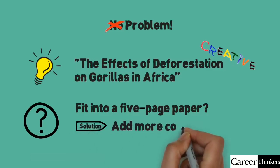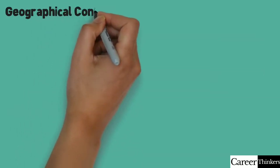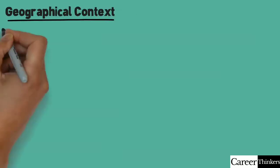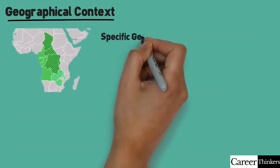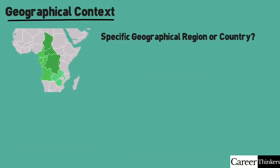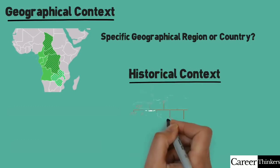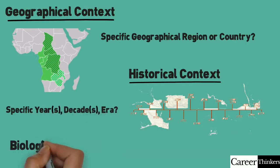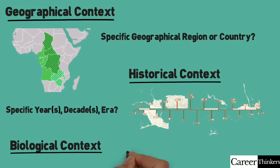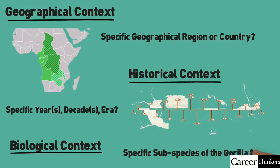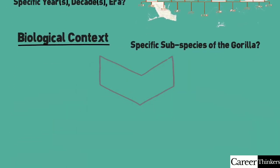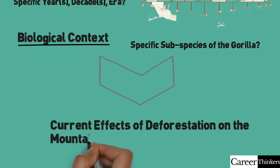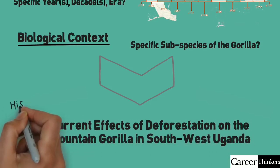The key is to add more context. For example, you could add some geographical context — is there a geographic region or country in which gorillas are specifically affected by deforestation? Perhaps you want to focus more on a historical context: is there a certain time aspect you want to write about, perhaps the time when deforestation really started to affect gorillas? And third, you could also add biological context — perhaps there's a specific subspecies of gorilla you're interested in writing about. When we combine all three contexts and incorporate them into the original topic, we get something like: current effects of deforestation on the mountain gorilla in southwest Uganda.